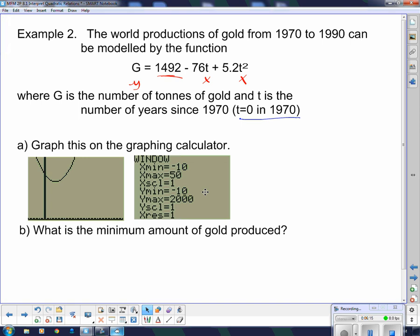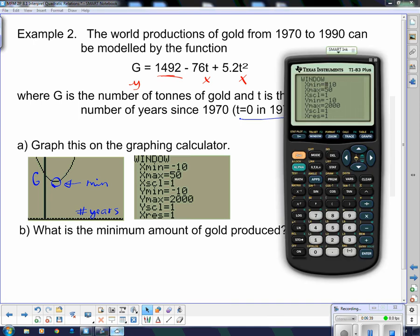It says, what is the minimum amount of gold produced? Well, the minimum amount of gold produced... Remember, this is the gold production over here, and over here is the number of years. So if I want the minimum, I need that point there. That is our minimum. So I'm going to have to find that point. And I'm going to go over how to do that on the graphing calculator. Pretty sure we've already done this and you have a note about this. But let's do this again.